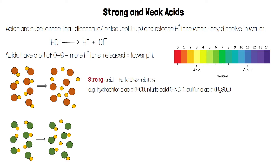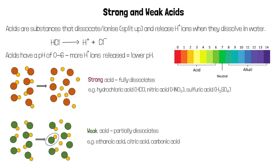This diagram shows the molecules of another acid dissociating. This is a weak acid, so it only partially dissociates. That means that only some of its molecules split up and release a hydrogen ion; the rest remain undissociated. Examples of weak acids include ethanoic acid, citric acid and carbonic acid.